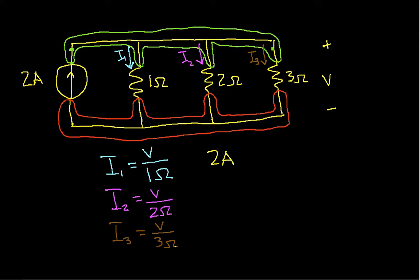The version of Kirchhoff's current law I will use is that the sum of the currents flowing into the node equals the sum of the currents flowing out of the node. Flowing into the node, we have 2 amps from the source. Flowing out of the node, we have I1, I2, and I3.